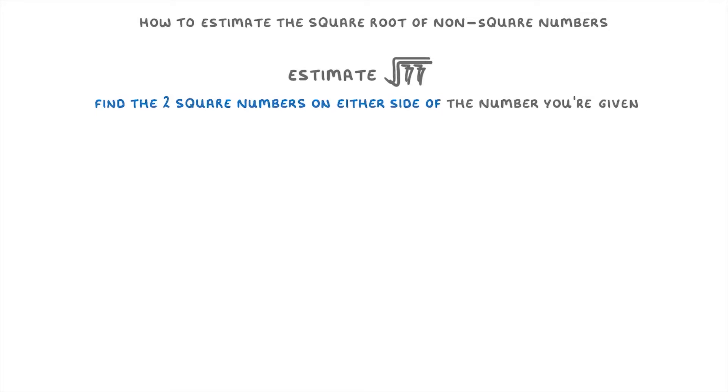If you need to find the square root of 77, remember that 8 squared is 64 and 9 squared is 81, because 64 and 81 are the square numbers on either side of 77.